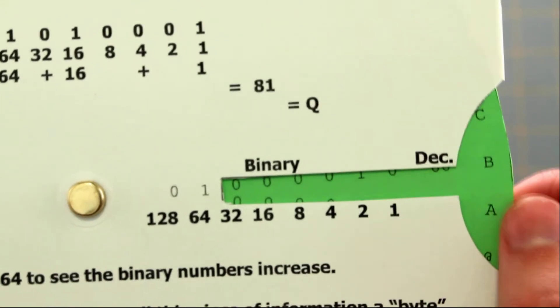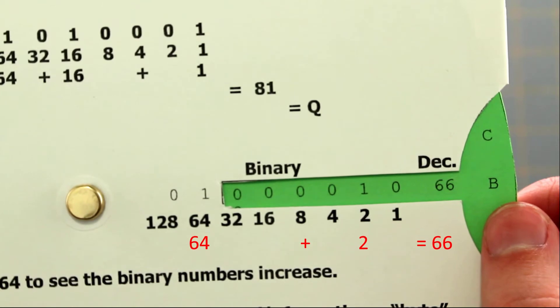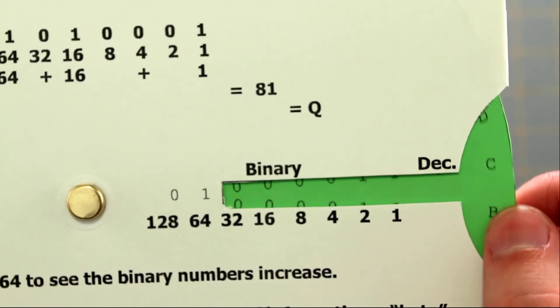When we advance to 66, we see that the 64's position and the 2's position are turned on, which add up to 66, and so on.